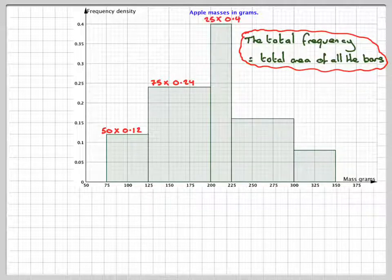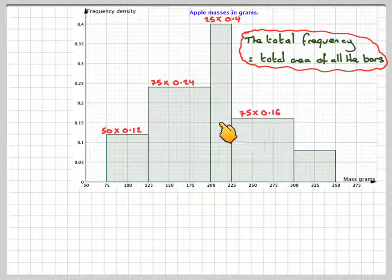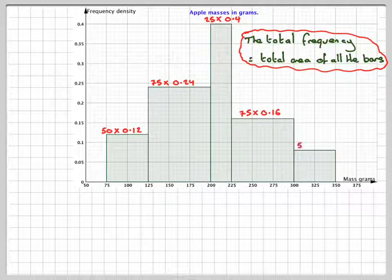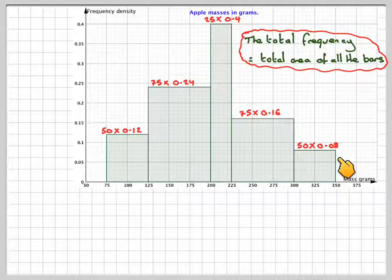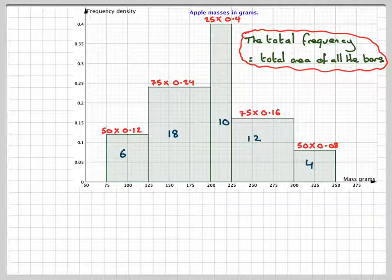This one's going to be 25, the width here is 25 times 0.4. This one's going to be 75 times 0.16, and this one's going to be 50 times 0.08. So having worked those out, that's 6, 18, 10, 12, and 4.